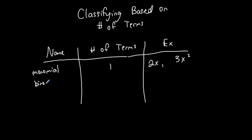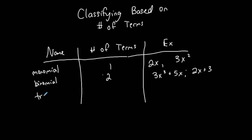A binomial contains two terms. For example, 3x to the third plus 5x is a binomial — it has two terms. It doesn't need to have a constant term; 2x plus 3 is also a binomial. A trinomial contains three terms — for example, 2x squared minus 3x plus 4 is a trinomial with one, two, three terms. This is in standard form.